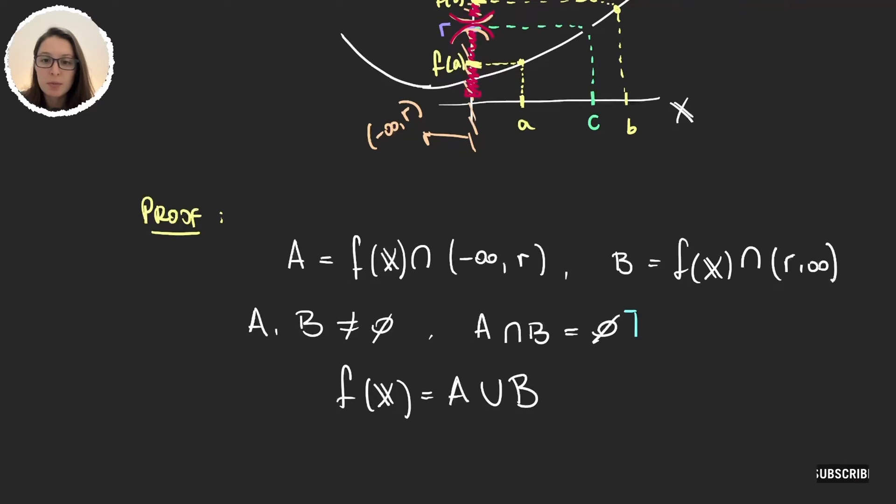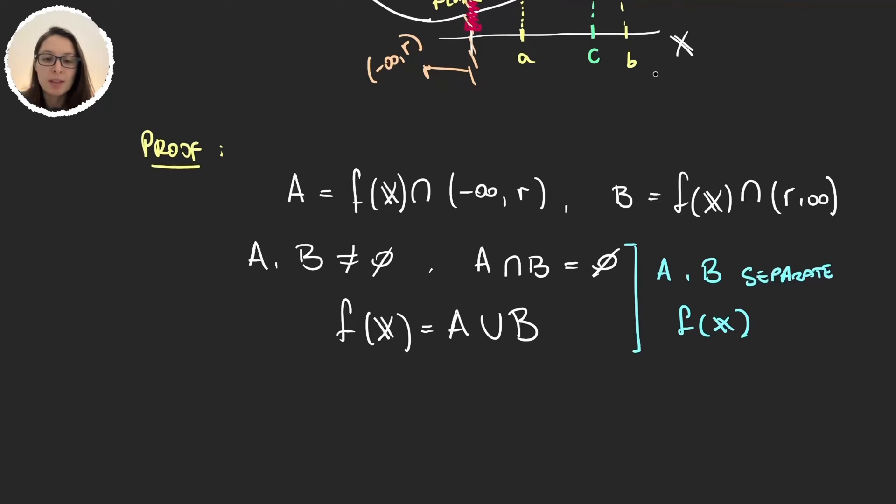And because we have these properties for A and B, then A and B form a separation of f of x. But remember now that X was connected, and because f is continuous, then f of x is also connected.